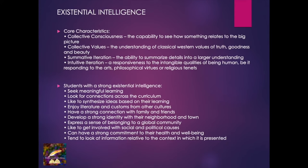Existential intelligence — what is the core characteristic? They are about collective consciousness, the capability to see how something relates to the big picture. Collective values, understanding classical western values of truth, goodness, and beauty. Summative iteration — the ability to summarize details into a larger understanding. Intuitive iteration — a responsiveness to the intangible qualities of being human, be it responding to arts, philosophical virtues, or religious tenets.